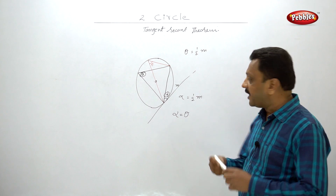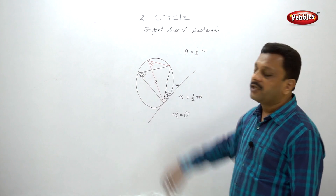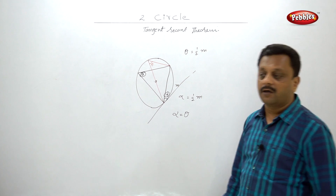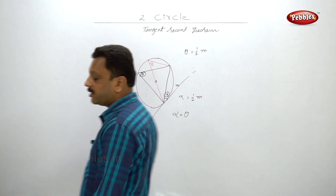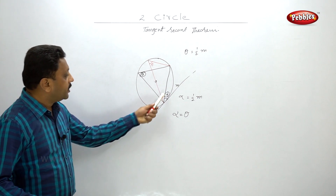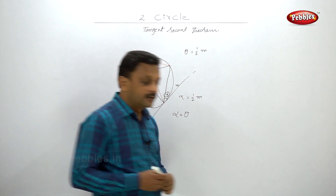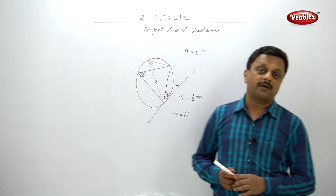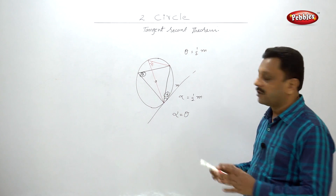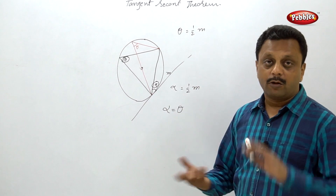So in this case, alpha and theta are equal — this is what angles in alternate segment means. And this alpha being half of M is nothing but your tangent secant theorem.